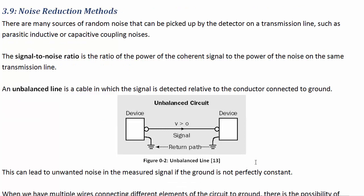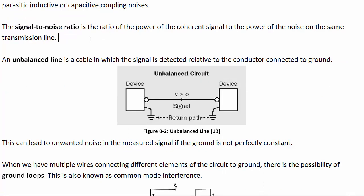3.9 noise reduction methods. There's many sources of random noise that can be picked up by a detector on a transmission line such as the parasitic inductive or capacitive coupling noises. These may be because there's other signals in those devices or just because of thermal fluctuations. So a signal to noise ratio is the ratio of the power of the coherent signal, the one that you're actually trying to measure and has a real signal that you're looking at at the frequency you're looking at it at, to the power of the noise on the same transmission line. An unbalanced line is a cable in which there's just a signal detected relative to the conductor connected to ground.